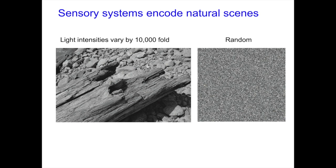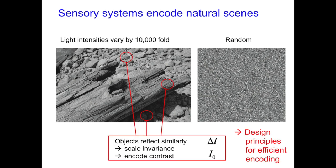To illustrate this point, consider the visual system. Light intensities can change over orders of magnitude from bright daylight to a moonless night. Even in a scene of a log on the beach, we have very large differences of brightness, yet there's a lot of structure. If you randomized these pixels it would look very different from the natural scene. What is clear is that reflectances of objects are relatively similar but illumination is different — so everything scales up and down together. There's a scale invariance, and a good way to deal with it is to encode contrast. This is one of many design principles in sensory systems.